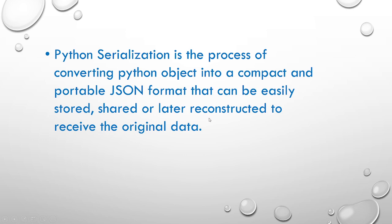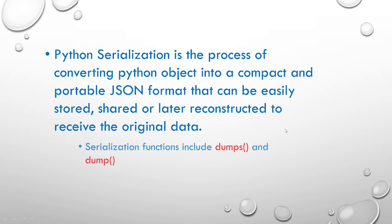When we store data, we store it in a format that is portable and can be used by other programming languages. If you have a Python object or dictionary object, it cannot be used by other languages such as Java, C, and others. For other programming languages to access that data, you have to convert it to a compatible form — that process is serialization, converting data to a portable JSON format.